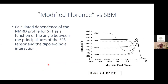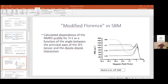If we compare the modified Florence model with the Solomon-Bloembergen-Morgan theory, at high field they are similar, but at low field there are very significant differences. Here the paramagnetic relaxation enhancement is plotted for a spin-1 system such as nickel ion, as a function of the angle between the principal axis of the zero field splitting tensor and the dipole-dipole interaction vector.